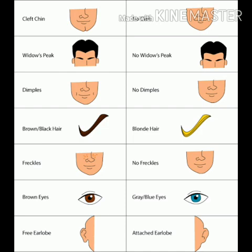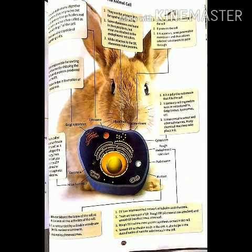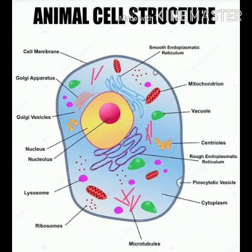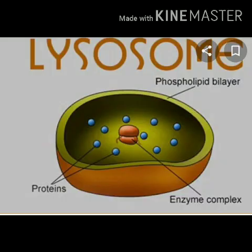Coming to page 191, the animal cell. It consists of the three main features I have already explained — cell membrane, cytoplasm, and nucleus. It also has organelles embedded in the cytoplasm, like lysosomes. This organelle is called the suicidal bag of the cell as it contains many digestive enzymes and destroys foreign bodies that enter the cell, and sometimes it destroys itself as well.